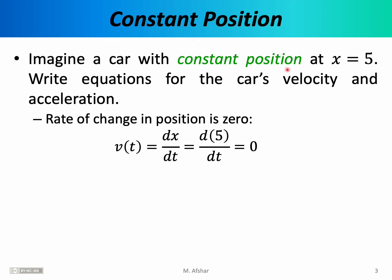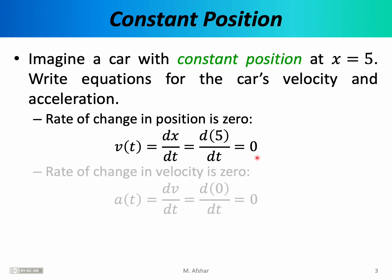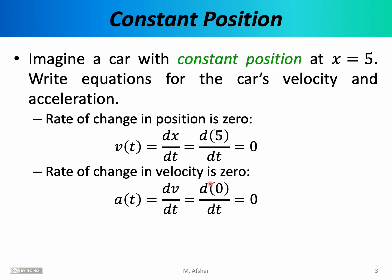This makes sense: we're talking about constant position, a car that is parked on the street — it's not going anywhere, so its velocity is obviously 0. I want you to see the more sophisticated calculus method of answering these questions, as we'll be using derivatives and integrals throughout this semester. For the acceleration: acceleration is the derivative of v with respect to t. Since v is 0, a constant, the derivative is 0, so the car's acceleration is also 0. Something that doesn't change has a rate of change equal to 0.